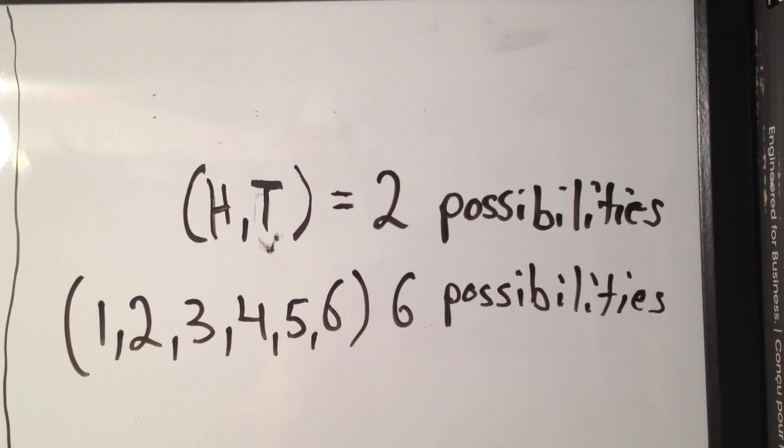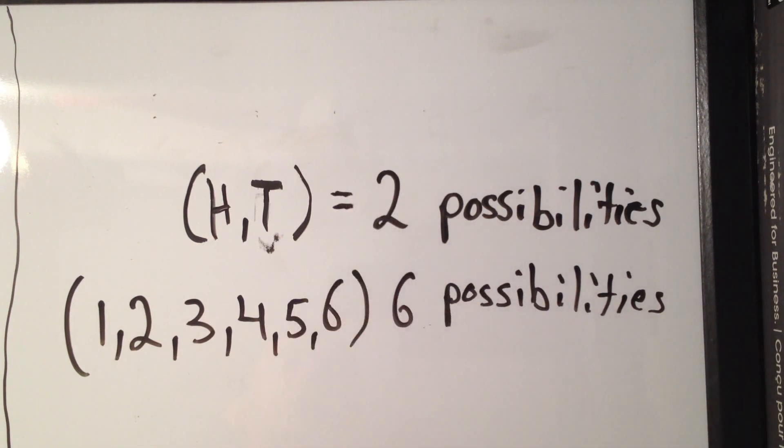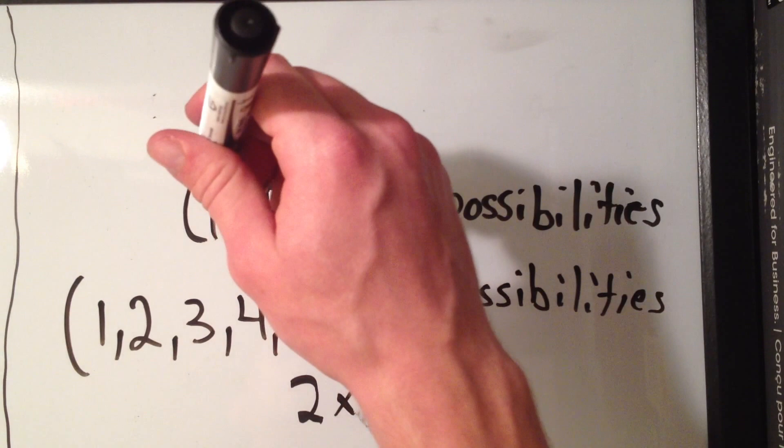And the way you do this is you just take the possibilities for the first event and you multiply it by the number of possibilities for the second event. So you just take a number of possibilities for the first event times a number of possibilities the second event and you get the total number of possibilities for the two events. And 12 is the number we would get if we wrote out...